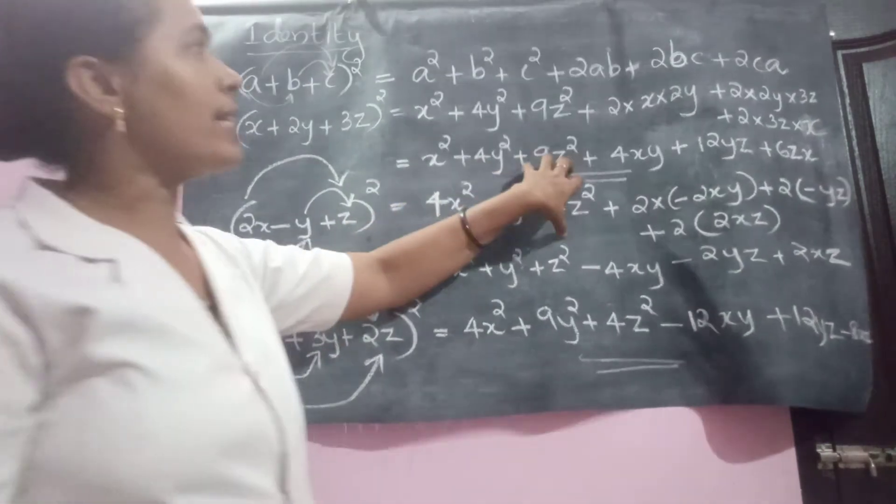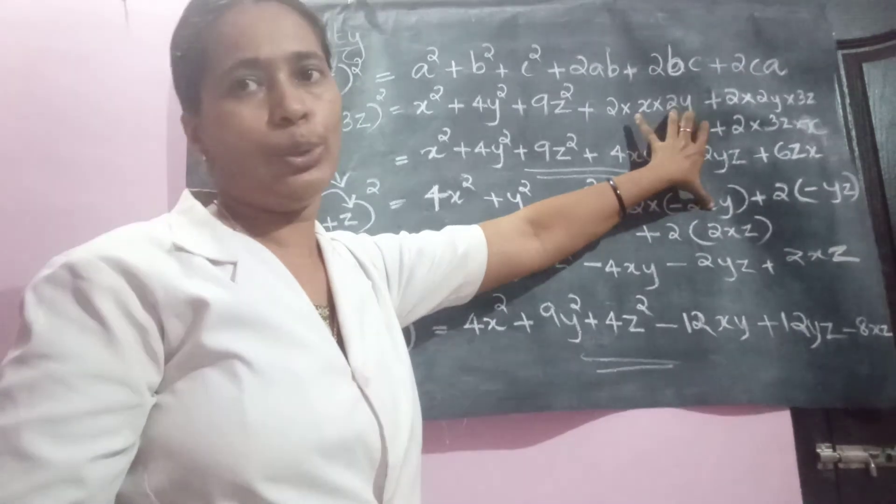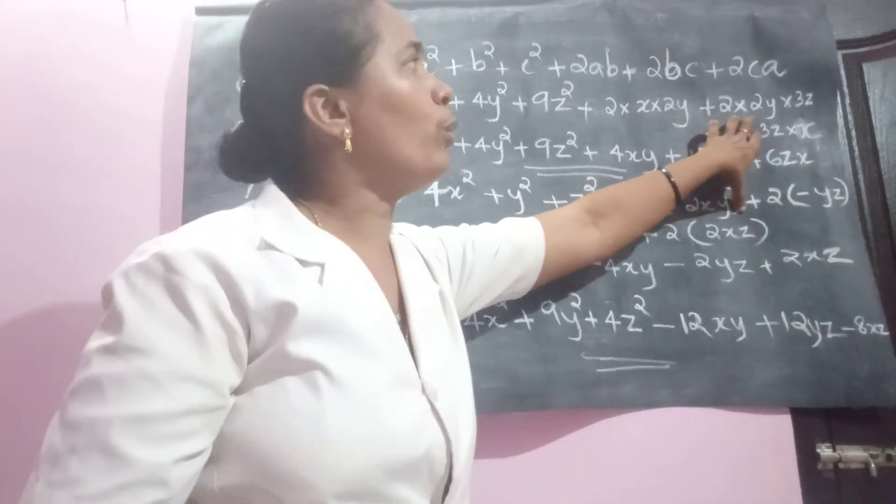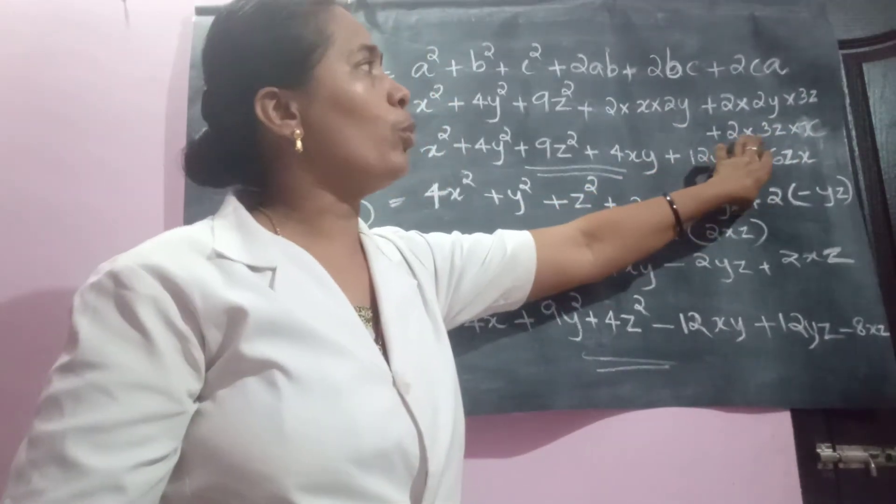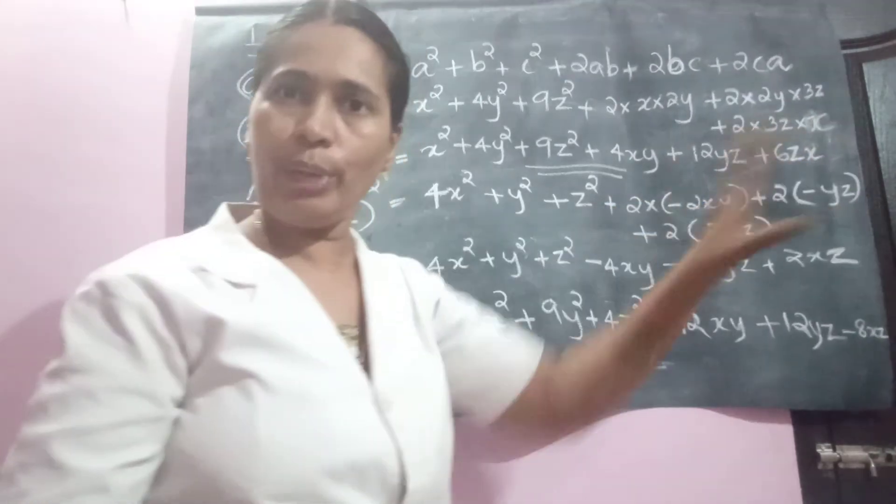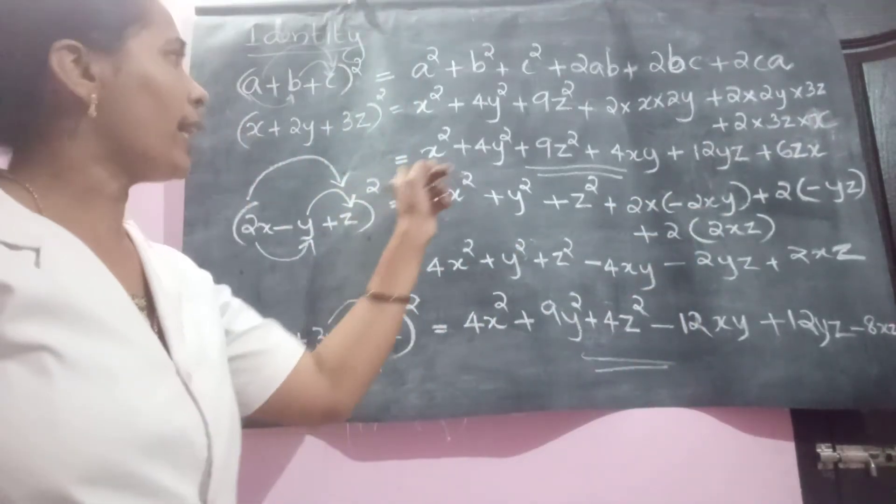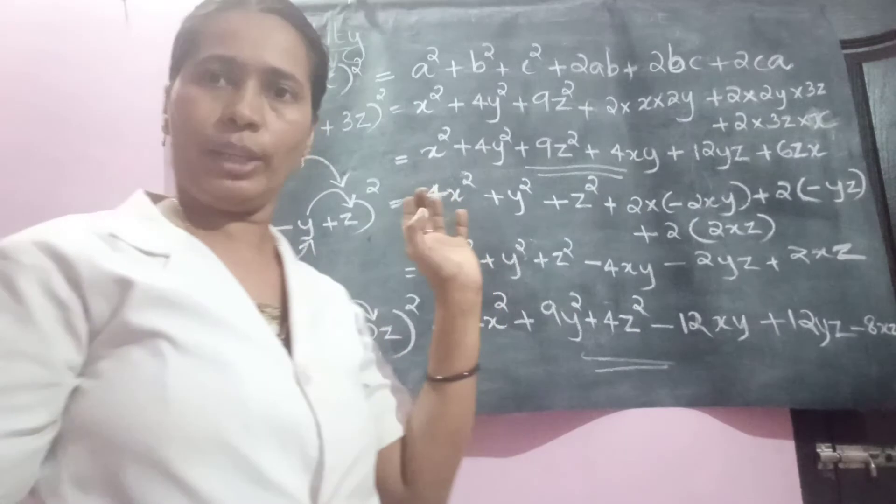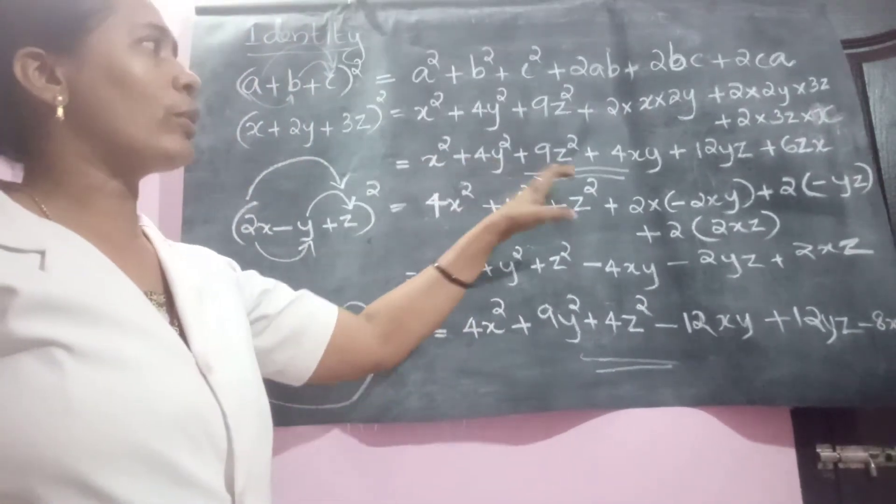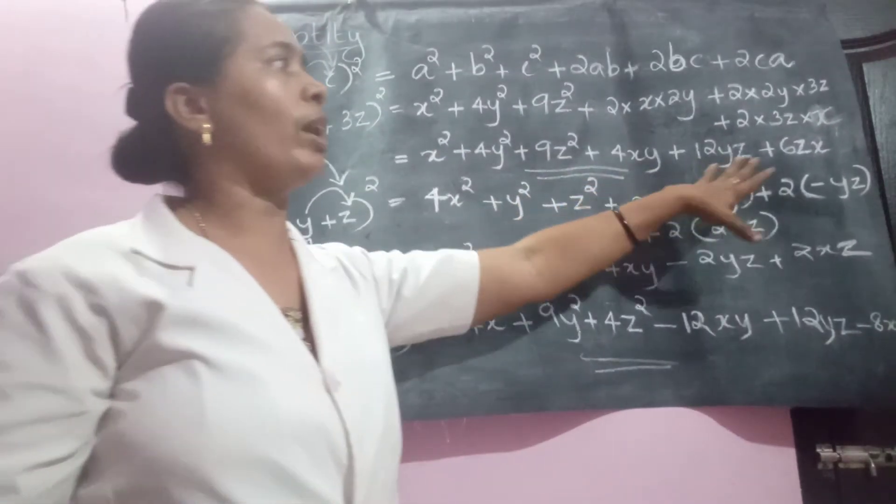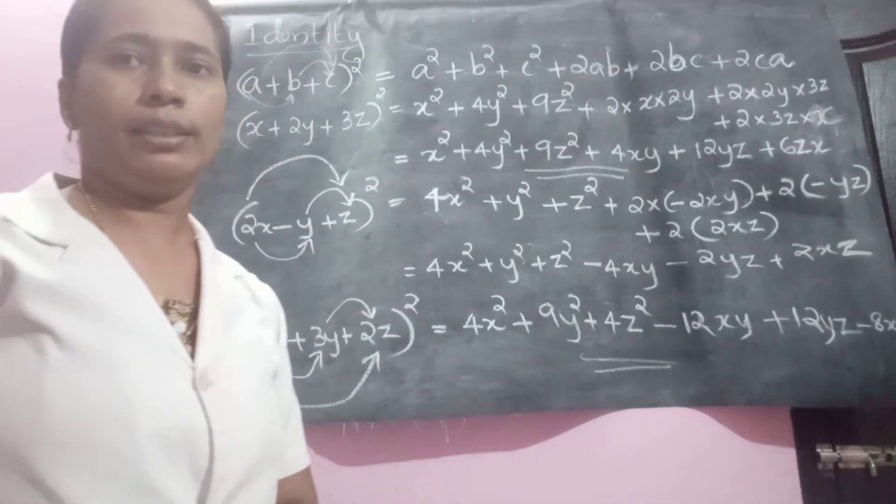See, teacher has written the same bit. 2 into X into 2Y plus 2 into 2Y into 3Z plus 2 into 3Z into X. If you need it not, if you get the idea, directly this line enough to us. X square, 4Y square, 9Z square, 4XY, 12YZ plus 6XZ.